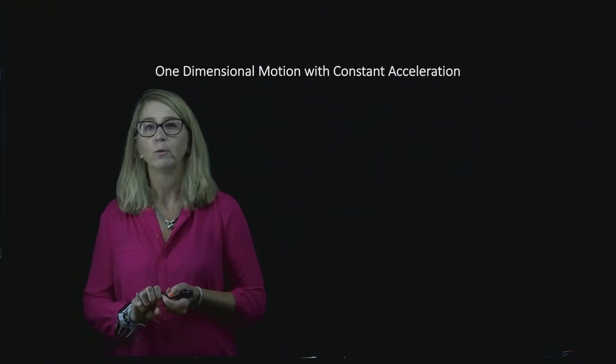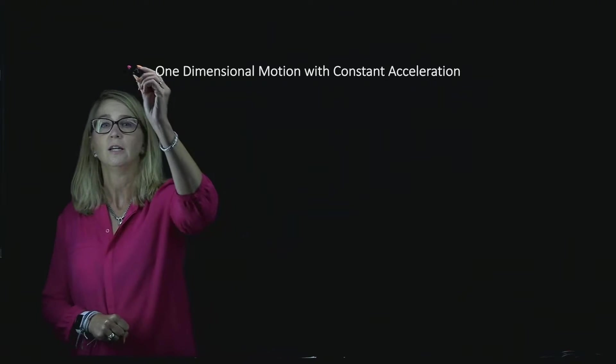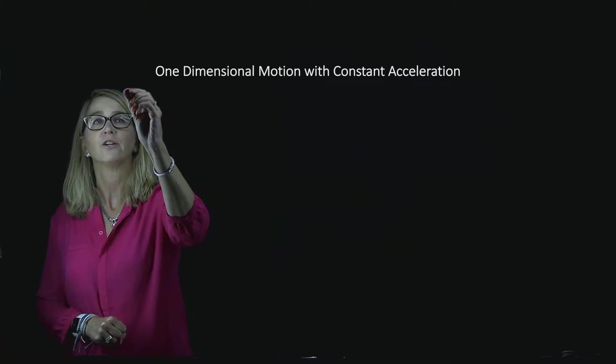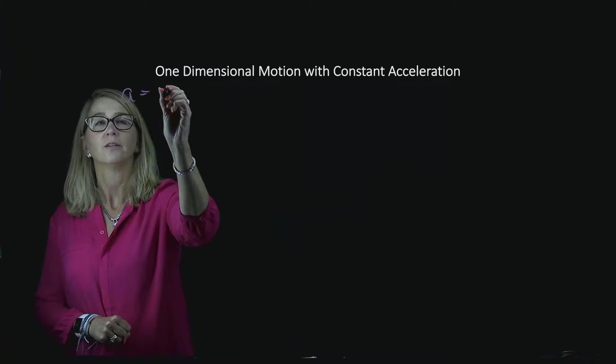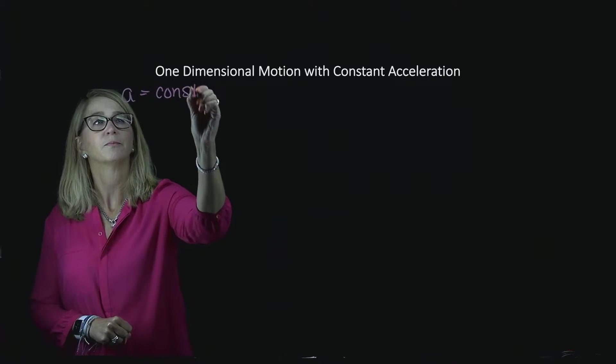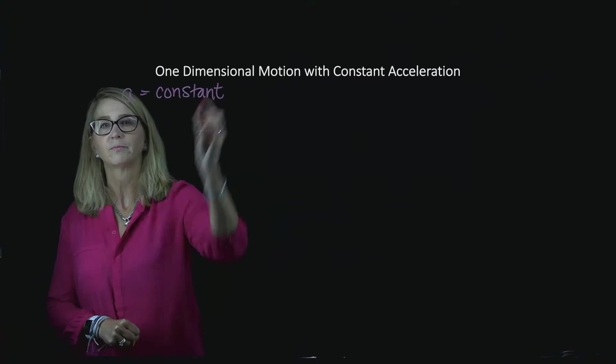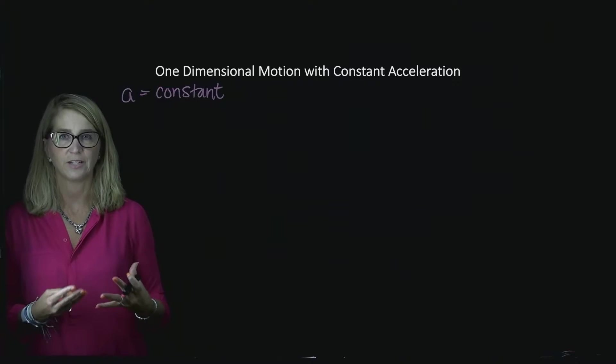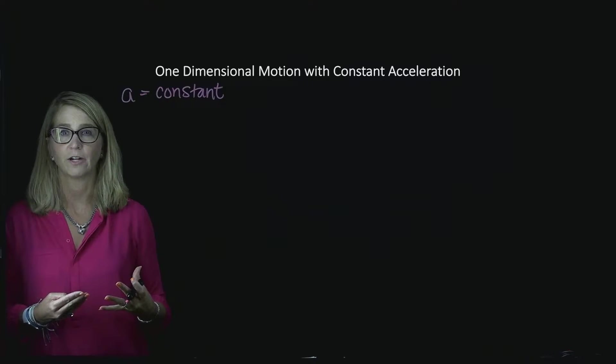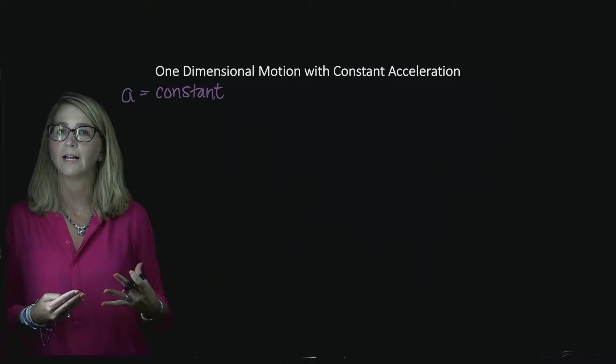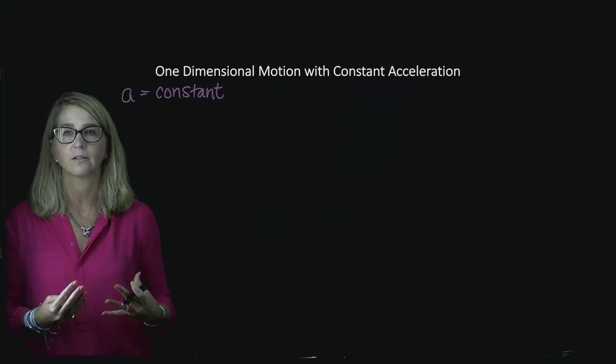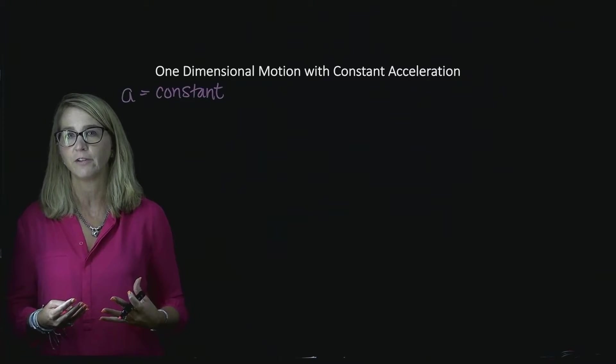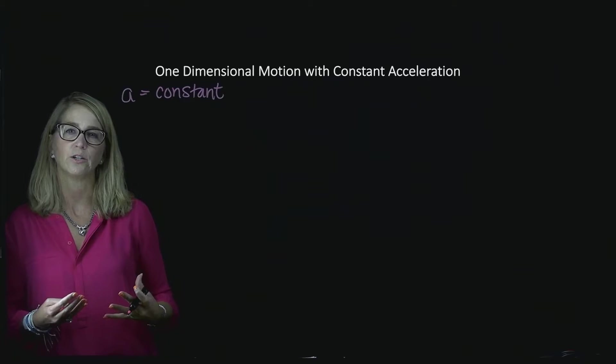So basically what we start off with is the acceleration is a constant. All right, so we're going to use a as the symbol for our acceleration and just think of it as a number. It's some sort of constant. It could be a variety of different values. We don't really need to know that right now.